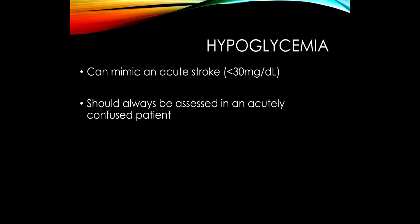Whenever someone comes into the hospital with a hemiplegia or aphasia, it's assumed they've had a stroke. But it's very important to remember that hypoglycemia is a stroke mimicker, and it's in all standard protocols. When someone comes into the emergency room looking like they've had a stroke, we immediately check their glucose. These are usually diabetic patients who maybe just took their insulin. They can have hemiplegia just like a stroke — glucose levels are generally less than 30. You replace the glucose, the hemiplegia resolves, and the patient returns to normal.